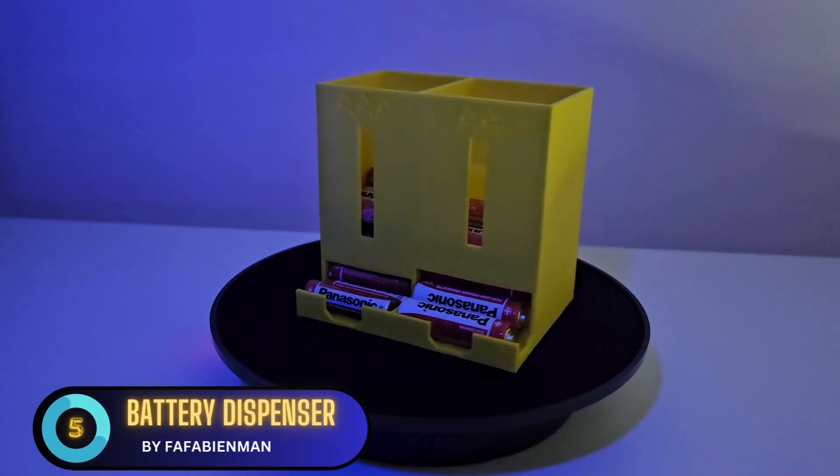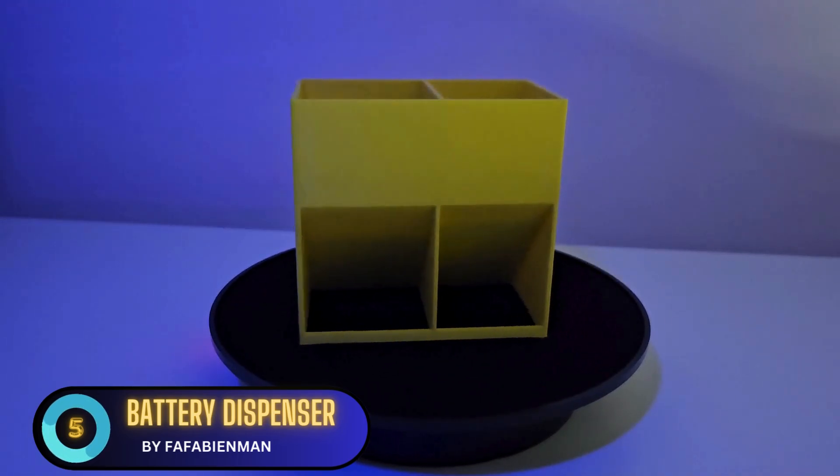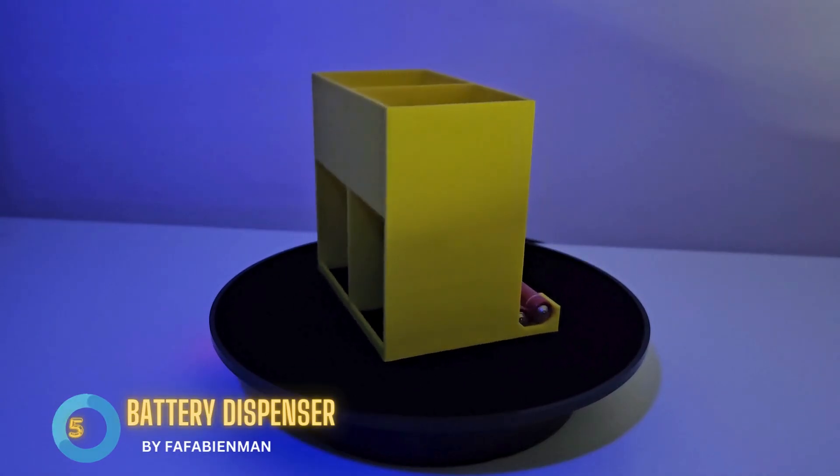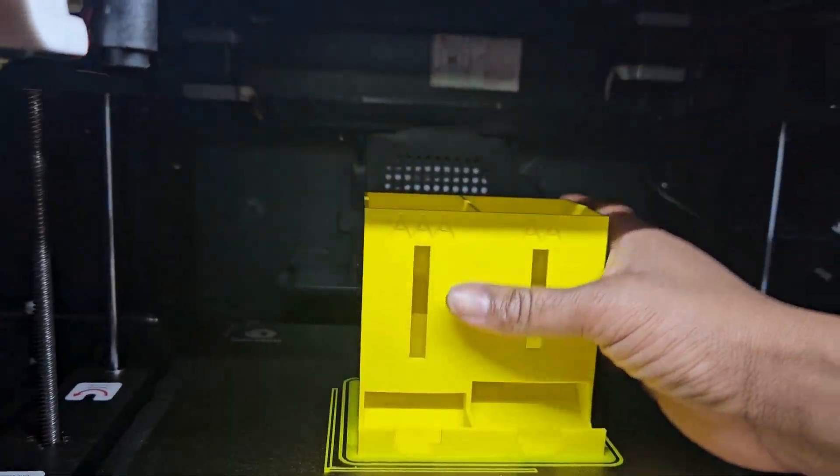Starting off on this list, at number 5 we have the handy Quickdraw battery dispenser to store your double and triple A batteries. This 3D file is easy to print and needs no extra support material.